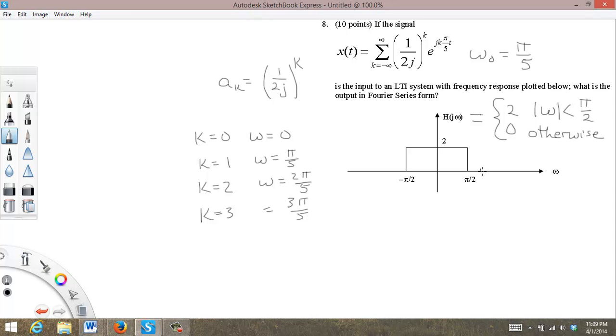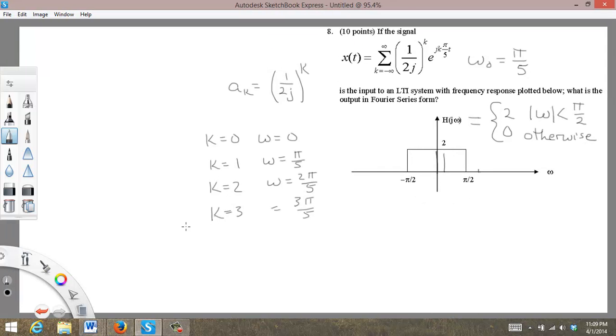So it gets multiplied by 0. The terms in the middle at 0, at pi over 5, and at 2 pi over 5.